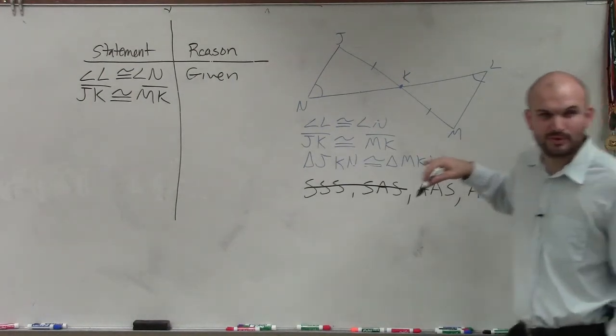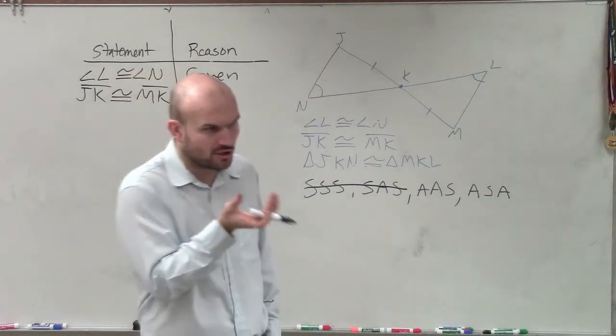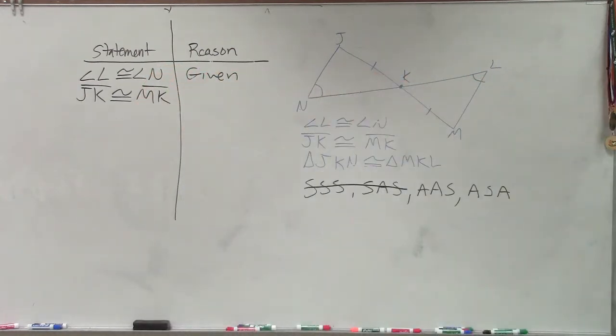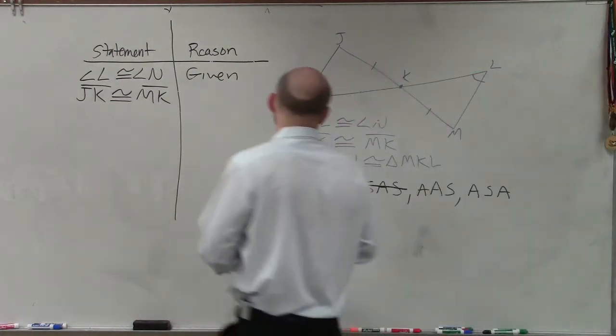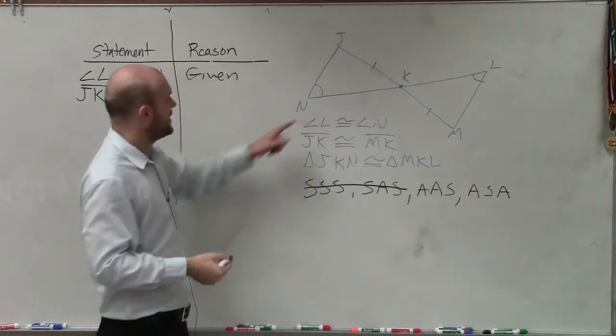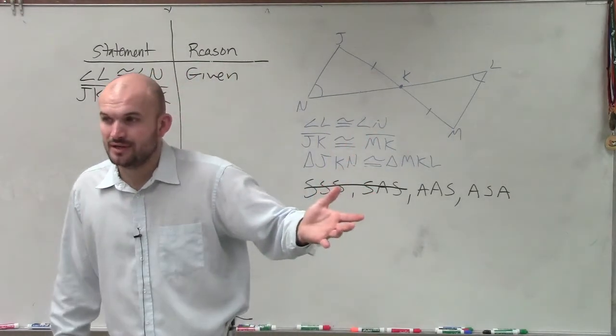When we do angle-side-angle, or side-angle-side, that middle has to be, rhymes with ping-cluded. Included, right? It has to be right between those two measurements. So if we're using angle-side-angle, that means it has to be like angle-side-angle or angle-side-angle. But right now I have this angle and it's opposite side.